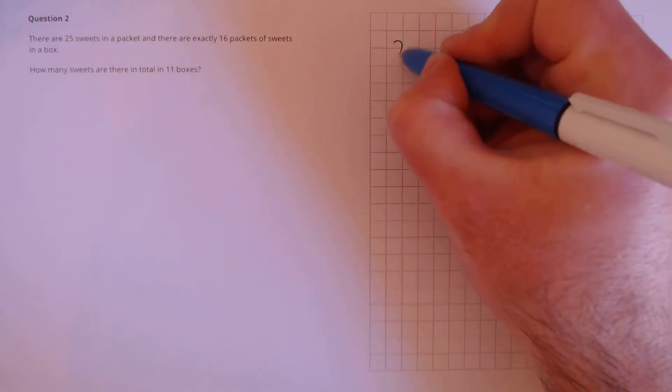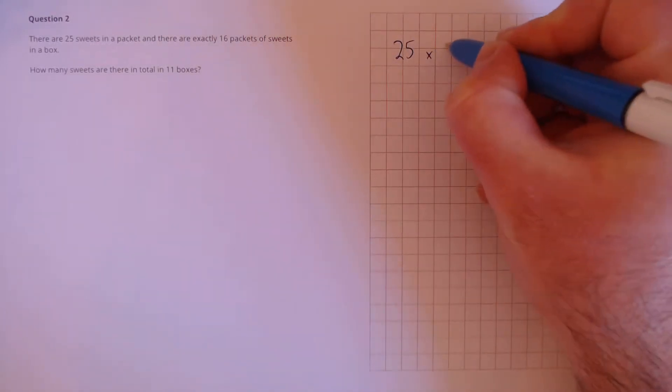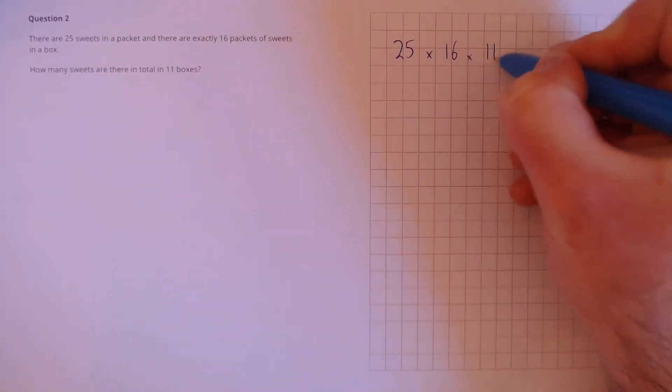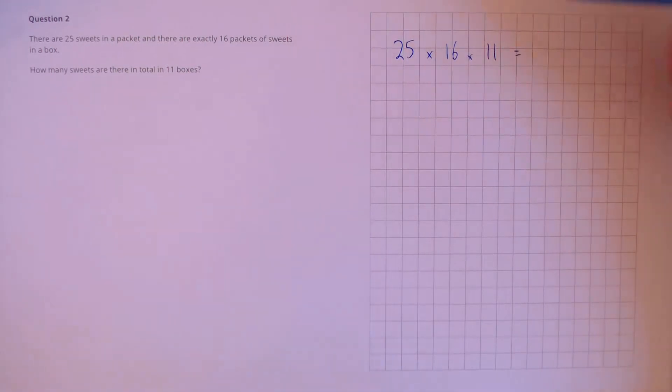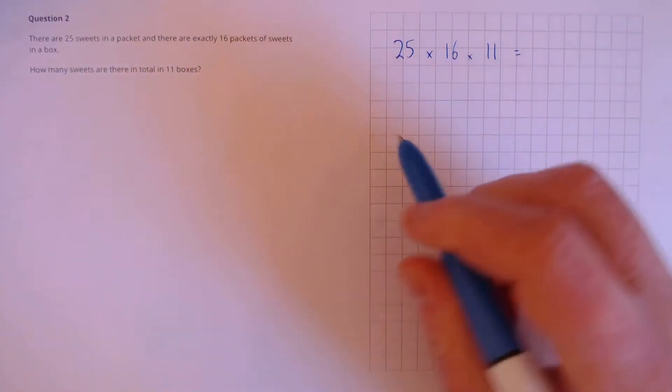We need to work out the answer to 25 multiplied by 16 multiplied by 11. This is quite complicated to do if we use our standard methods, however we can take a shortcut.